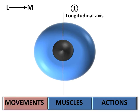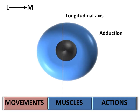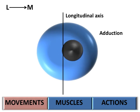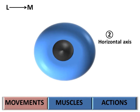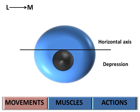Along the longitudinal axis, the eyeball can move towards the lateral wall of the orbit, called abduction, or towards the medial wall of the orbit, called adduction. Along the horizontal axis, the eyeball can move towards the roof of the orbit, called elevation, or towards the floor of the orbit, called depression.